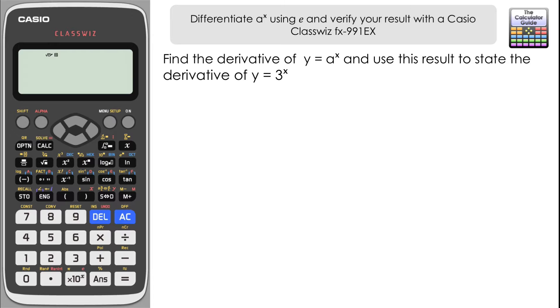We have to find the derivative of y equals a to the x and then use this result to state the derivative of y equals 3 to the x. Now if you're currently studying A-level maths or similar, you may have come across the general result for the derivative. It's arguably easier to just remember this form: y equals a to the x, then dy/dx equals a to the x multiplied by the natural logarithm of a. So whatever the base is of your power becomes the argument within the logarithm.